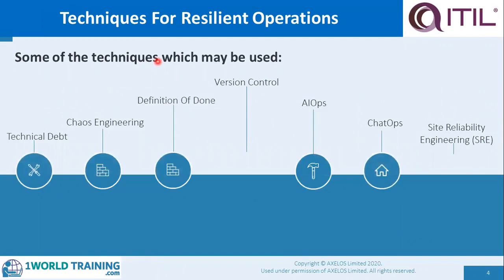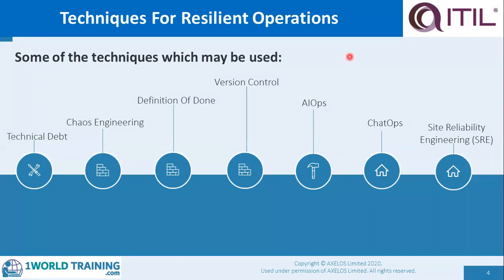Some of the techniques which may be used for resilient operations are: technical debt, chaos engineering, definition of done, version control, AI ops, chat ops, and site reliability engineering (SRE). In this section, we will also look at the techniques for co-creation of value and assured conformance, not just resilient operations. In a previous section, we covered techniques for fast development and valuable investments. Note that these five topics are extremely important for the exam — they carry about 24 marks out of the 40 marks in the exam, and the practices connected with them have a high weightage.